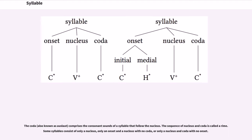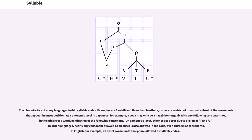The coda comprises the consonant sounds of a syllable that follow the nucleus. The sequence of nucleus and coda is called a rhyme. Some syllables consist of only a nucleus, only an onset and a nucleus with no coda, or only a nucleus and coda with no onset. The phonotactics of many languages forbid syllable codas. Examples are Swahili and Hawaiian.